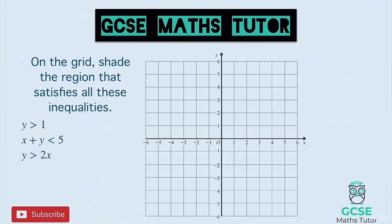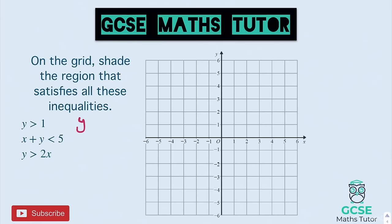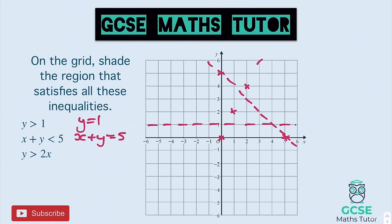I've linked the worksheet in the description for the next four questions. Make sure you've got it printed off or follow along — you can even draw it out yourself on squared paper. Let's look at the first worksheet question: on the grid, shade the region that satisfies these inequalities. Pause the video and have a go. For this one, y equals 1 is a dotted horizontal line, x plus y is less than 5 connects (0, 5) and (5, 0), and y is greater than 2x starts at zero with gradient 2.